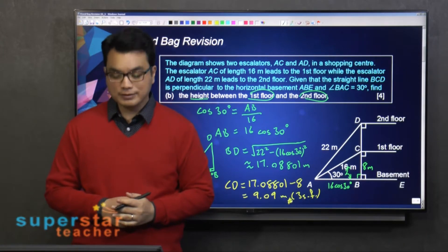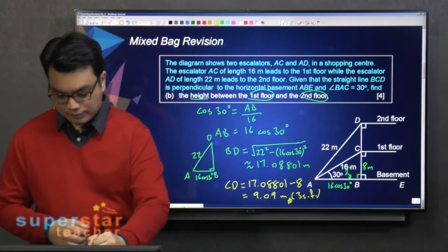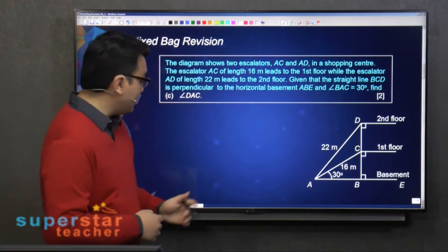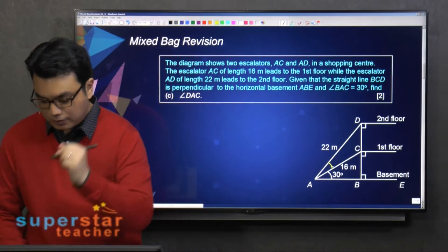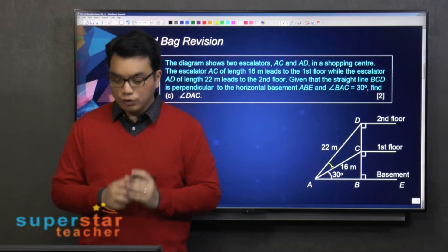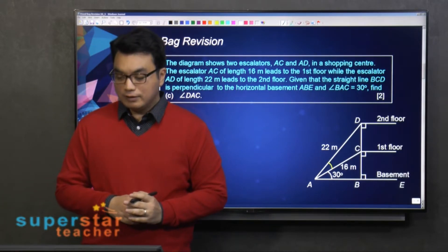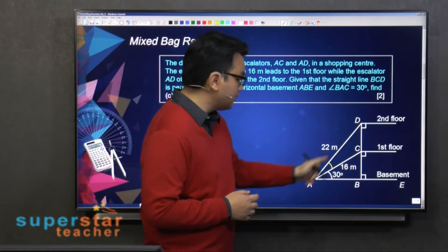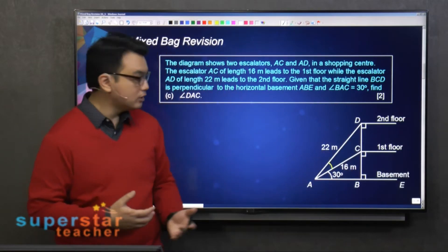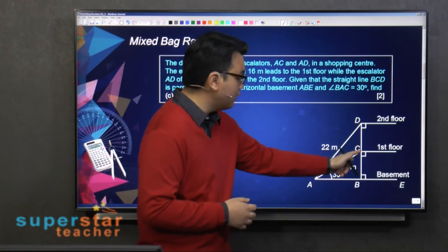Alright. Okay, then find angle DAC. So this angle over here, okay? So how do we find this angle? Can we just find this angle using this triangle ACD? No, we can't, right? Because triangle ACD is not a right-angled triangle.